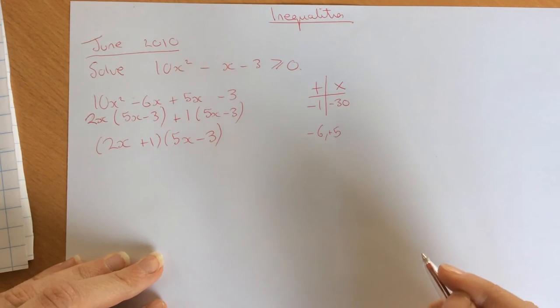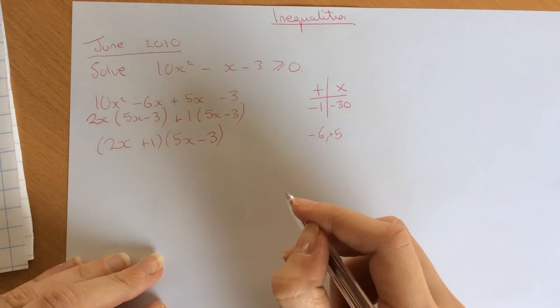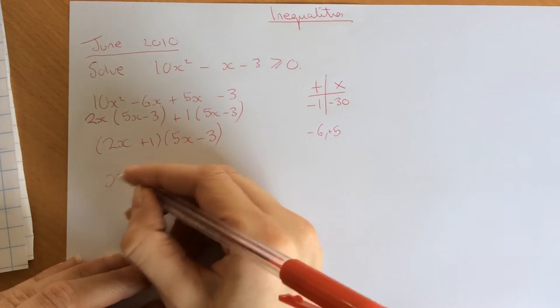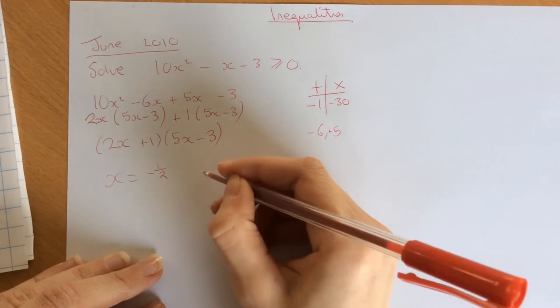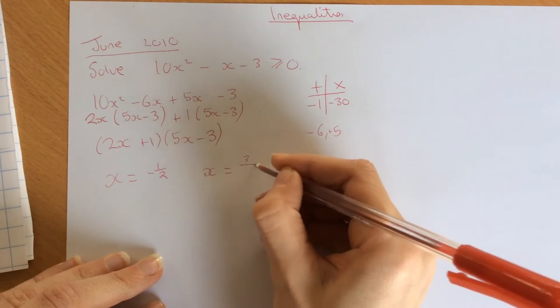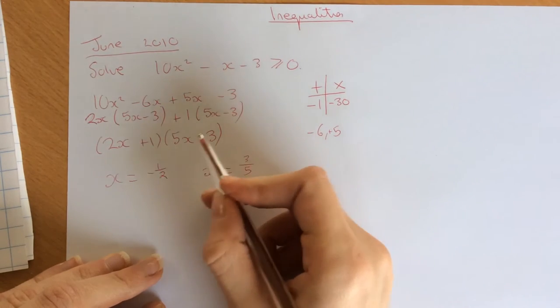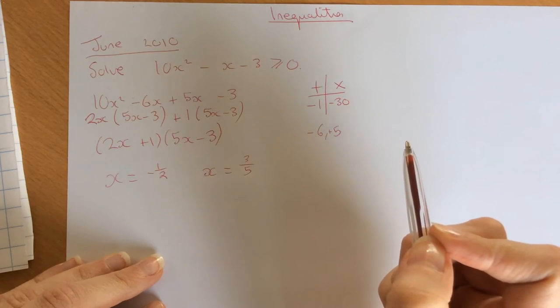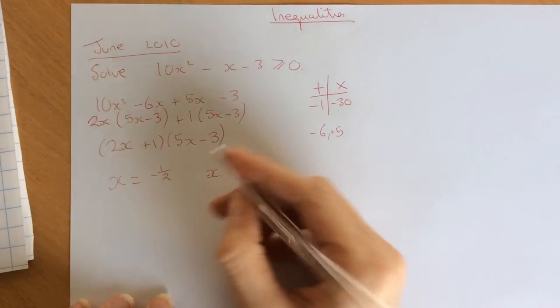That's the third step. Then we need to get our two values of x. From this bracket, x is minus 1 half, and from this bracket, x is 3 over 5, moving 3 over and dividing by 5.